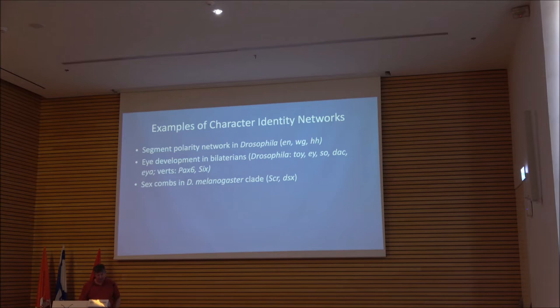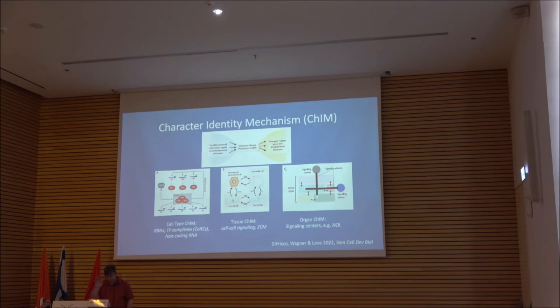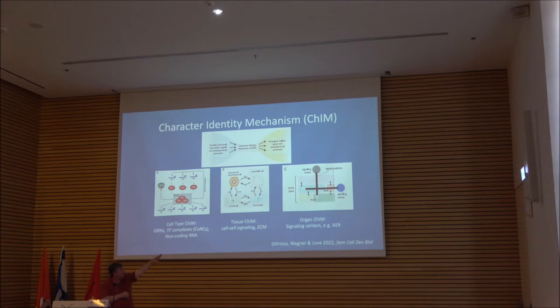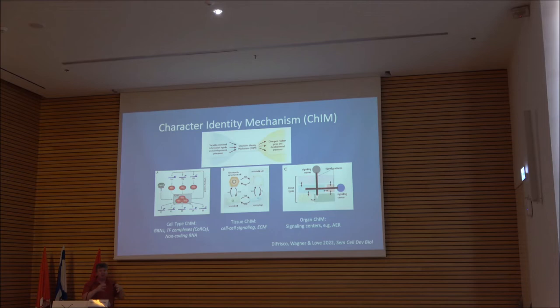With James DeFrisco and Alan Love, this idea of character identity networks has been expanded to cell type character identity networks, tissues, organs, and actually body plans. In each case, the basic structure is the same: there is a complex at the level of cells of transcription factors and associated proteins with a particular structure that mechanistically underlies the formation of these newly individuated structures.